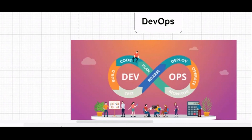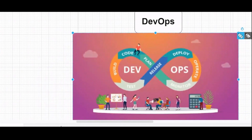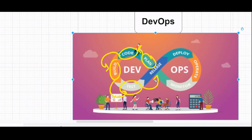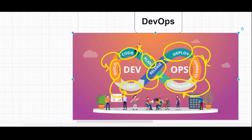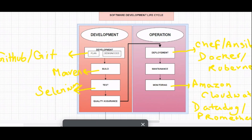We can see the DevOps cycle represented as an infinity loop. It starts from the planning phase, moves to coding, then building, then testing where all tests are done, then release — which is the integration part — then deployment, then maintenance and monitoring as the operational part. If a bug is found during monitoring, it loops back to the planning phase. This is how the complete Software Development Lifecycle works in DevOps.